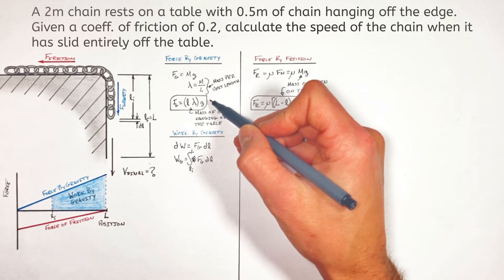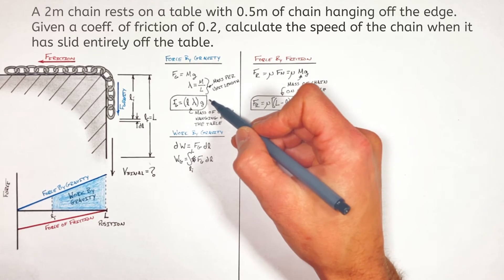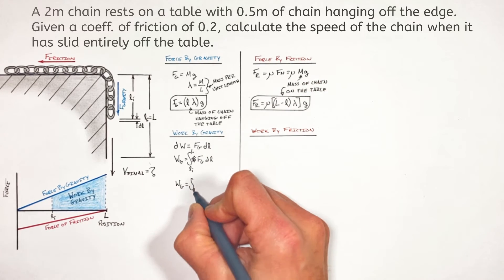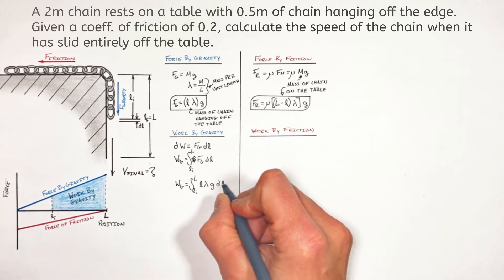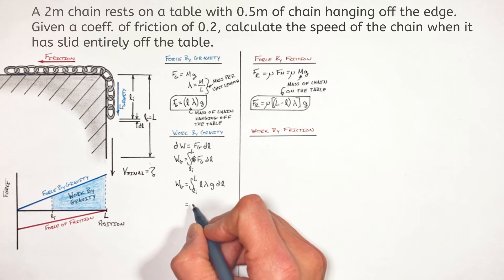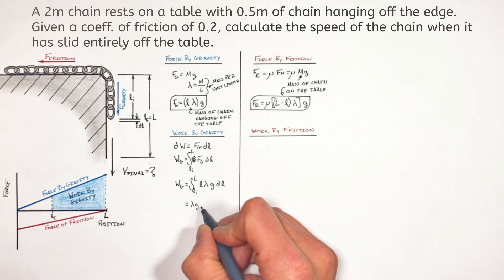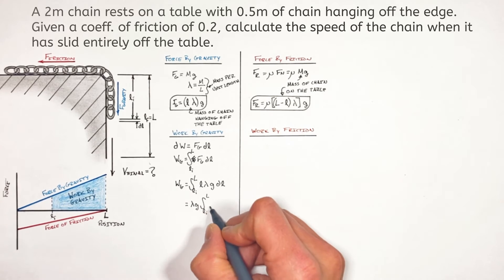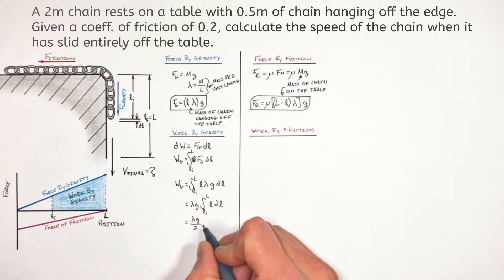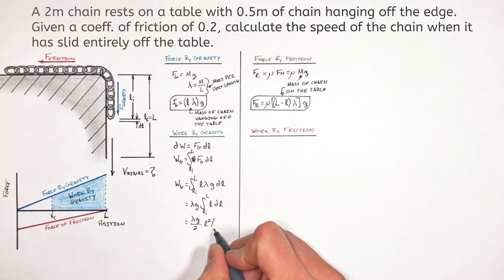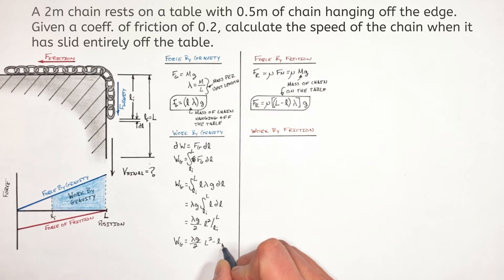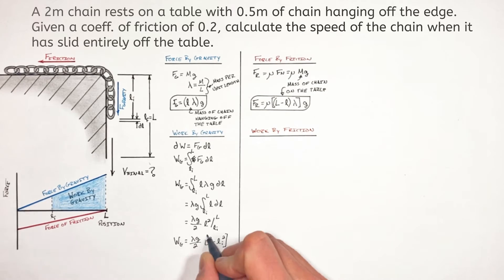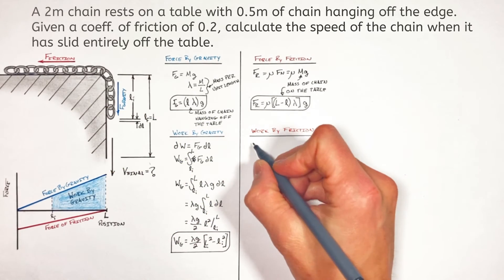Substituting our equation for the force of gravity into the integral, the mass per unit length lambda and g are just constants. Evaluating that integral gives us the work done by gravity as the chain is pulled all the way off the table.